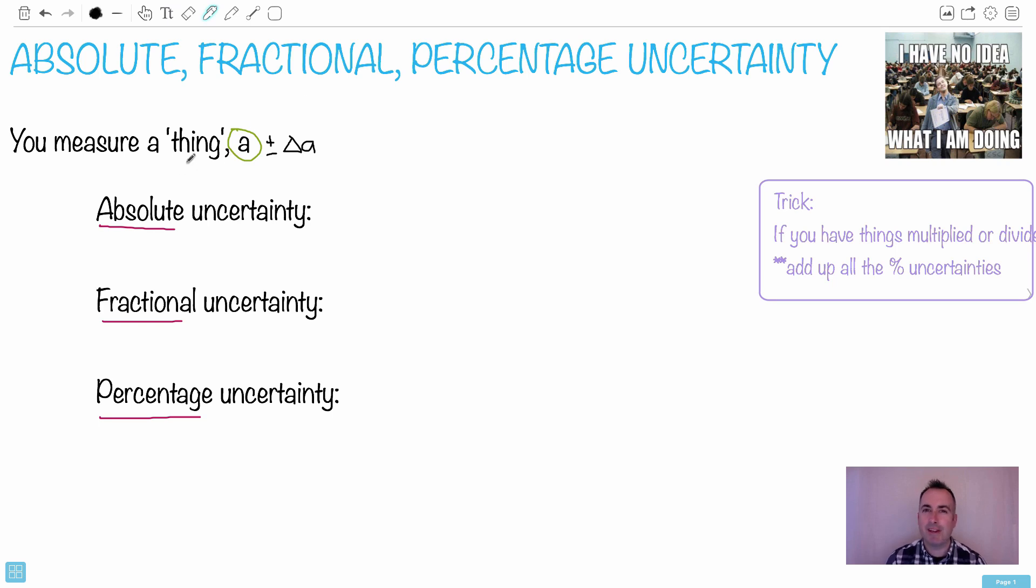So the definition of absolute uncertainty is super easy. The absolute uncertainty is just plus or minus delta A. In other words, the absolute uncertainty is the actual value of your uncertainty. So if you're measuring a distance of like 2.0 meters, then the uncertainty would be like 0.1 meters. So it's an actual literal value.